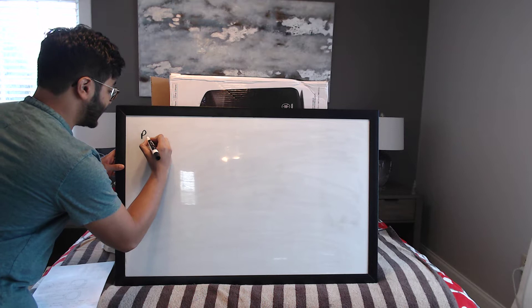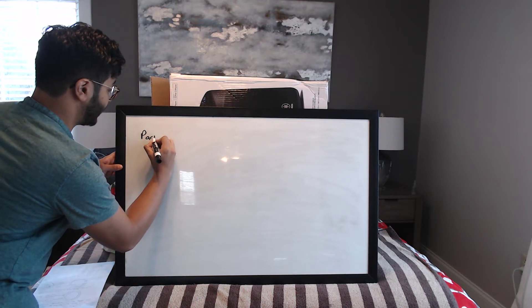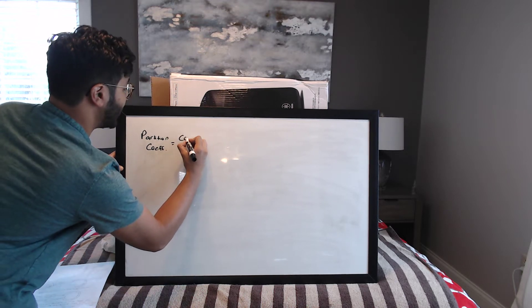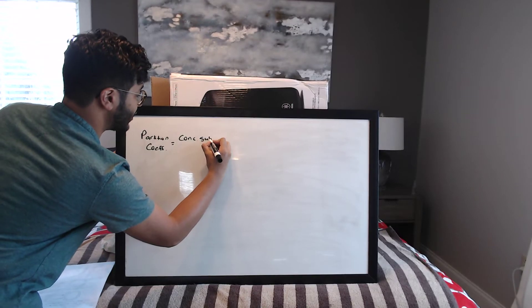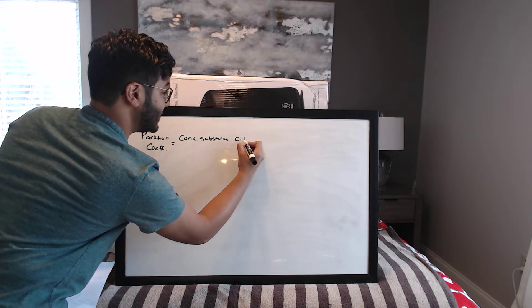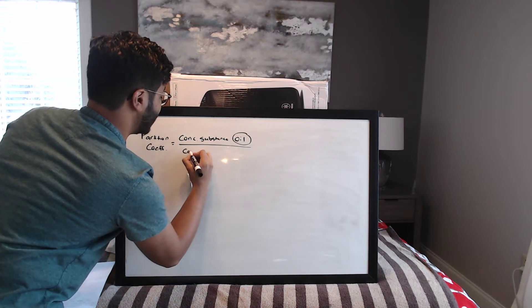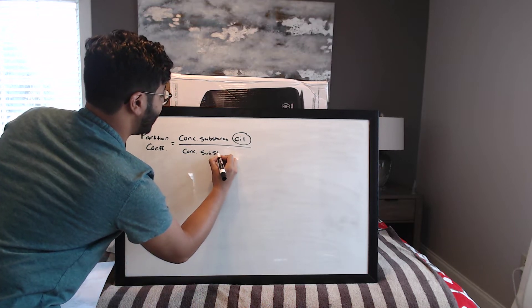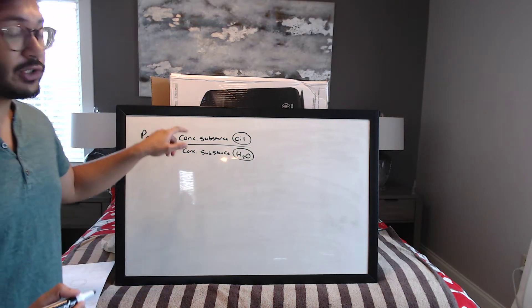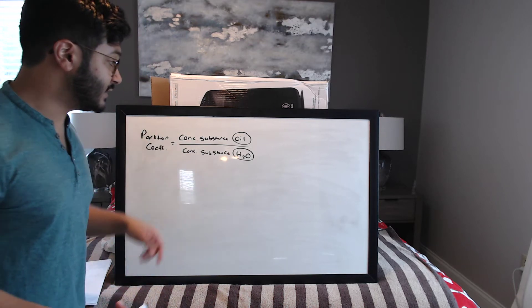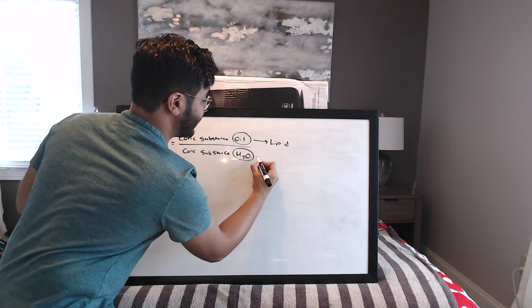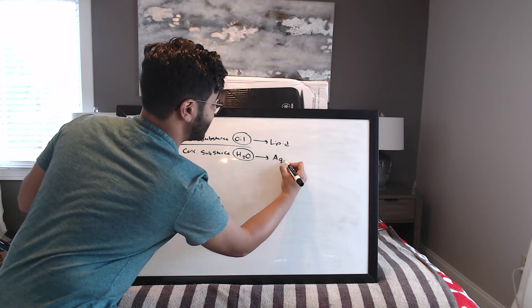The equation for partition coefficient is the concentration of the substance in the oil phase divided by the concentration of the substance in the water phase — it's just a straight ratio. The oil phase translates to the lipid phase, and the water phase translates to the aqueous phase.